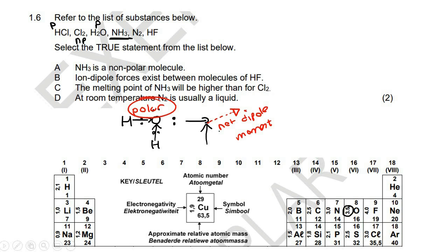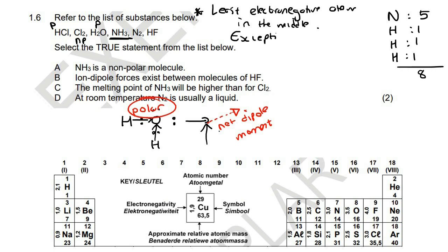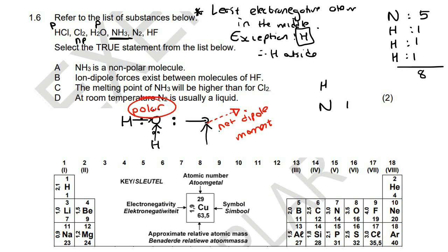The next one is NH3, ammonia. If you look at nitrogen, it's in group five, so it's got five valence electrons. There are three hydrogens and each one has one valence electron. So if you add that up, there are eight valence electrons in total. The rule for drawing Lewis diagrams is that you should always put the least electronegative atom in the middle. But remember, there is an exception — hydrogen always goes on the outside, regardless of electronegativity. So I'll put nitrogen in the middle and the three hydrogens on the outside.